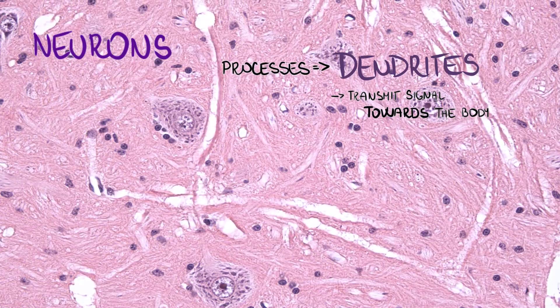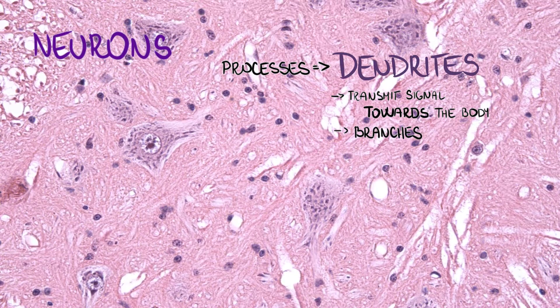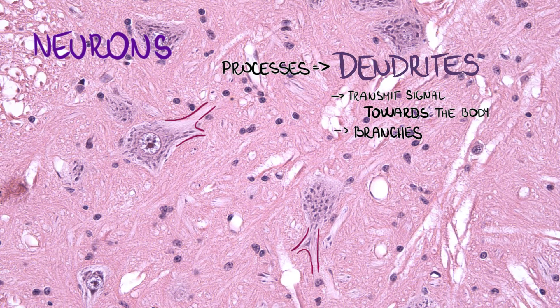Dendrites, on the other hand, branch a lot. Sometimes we can see the branches, sometimes we can't because they are too thin, but they do contain the Nissl substance.